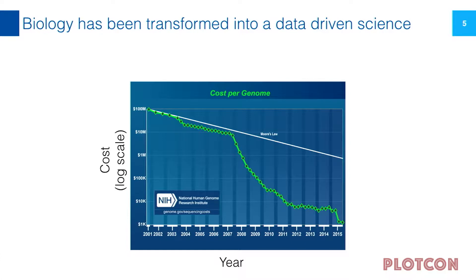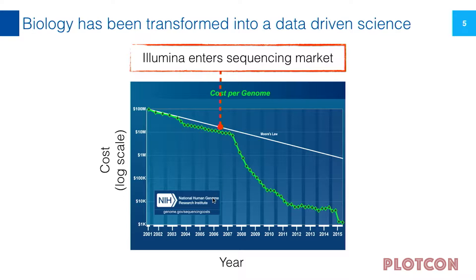Biology has been transformed into a data-driven science. This plot shows the cost of sequencing a genome over time. Around the turn of the century we had our first draft of the human genome at very high cost. The reduction in sequencing cost has recently outpaced what you would expect if it followed Moore's Law, and we can almost single-handedly attribute that to the Illumina machine. Illumina entered the sequencing market between 2006 and 2007 and practically revolutionized the way we can understand what's happening inside the cell.